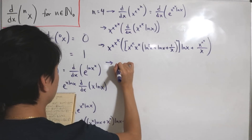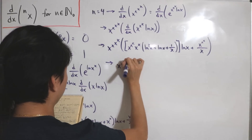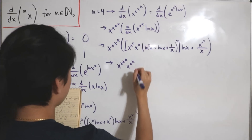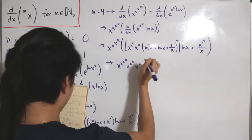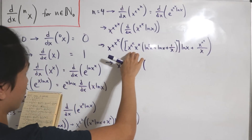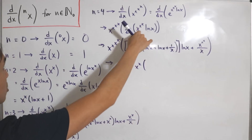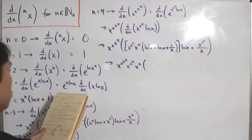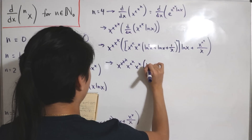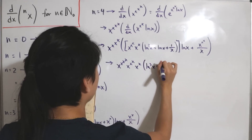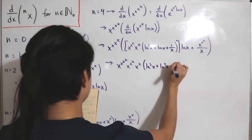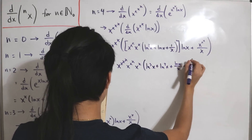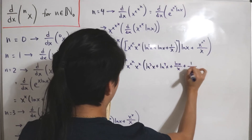Simplifying the n=4 result by factoring out, we get x^(x^(x^x)) multiplied by x^(x^x) multiplied by x^x, times [ln³(x) + ln²(x) + ln(x)/x + 1/(x^x · x)].